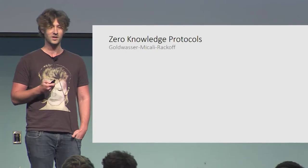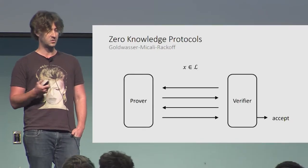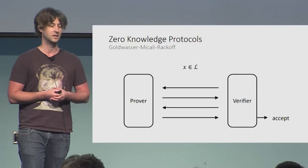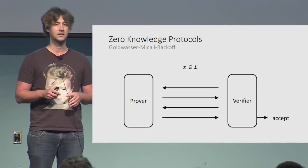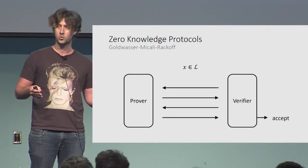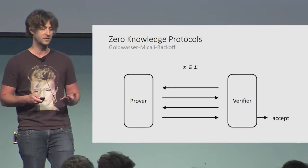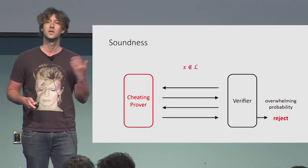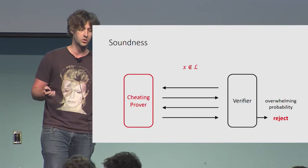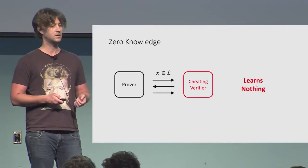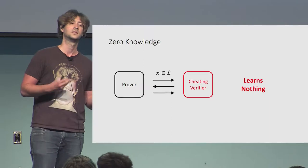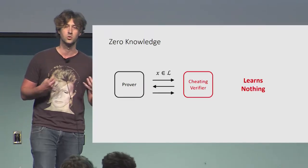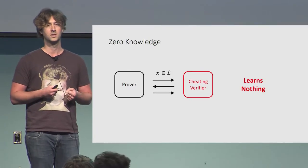Let me remind you what zero-knowledge protocols are. Here we have a prover that interacts with the verifier in order to prove some statement. The most basic requirement is, of course, completeness: if the statement is true, we want the verifier to accept. The second requirement is soundness: if the statement is false, the verifier should reject with overwhelming probability.